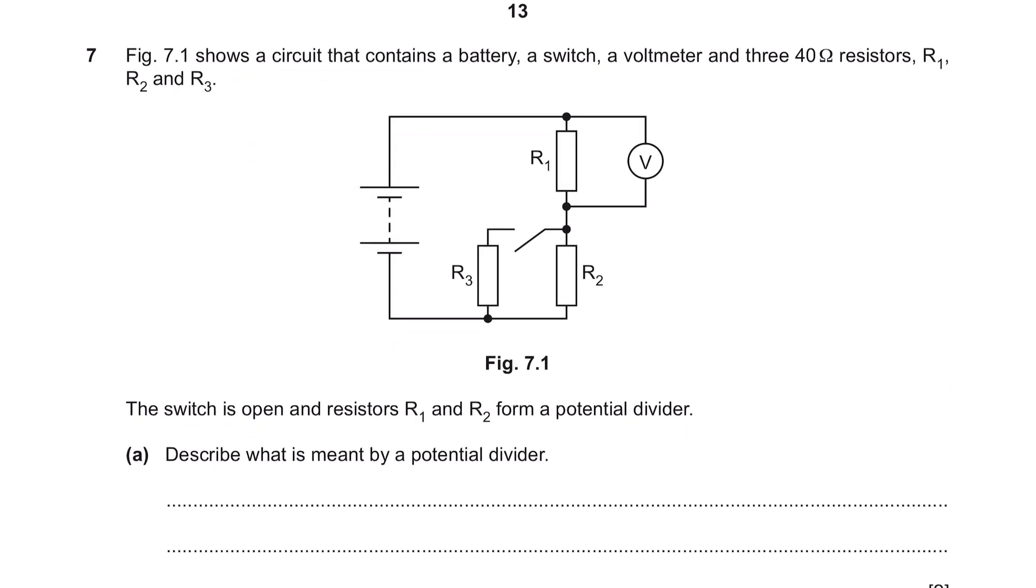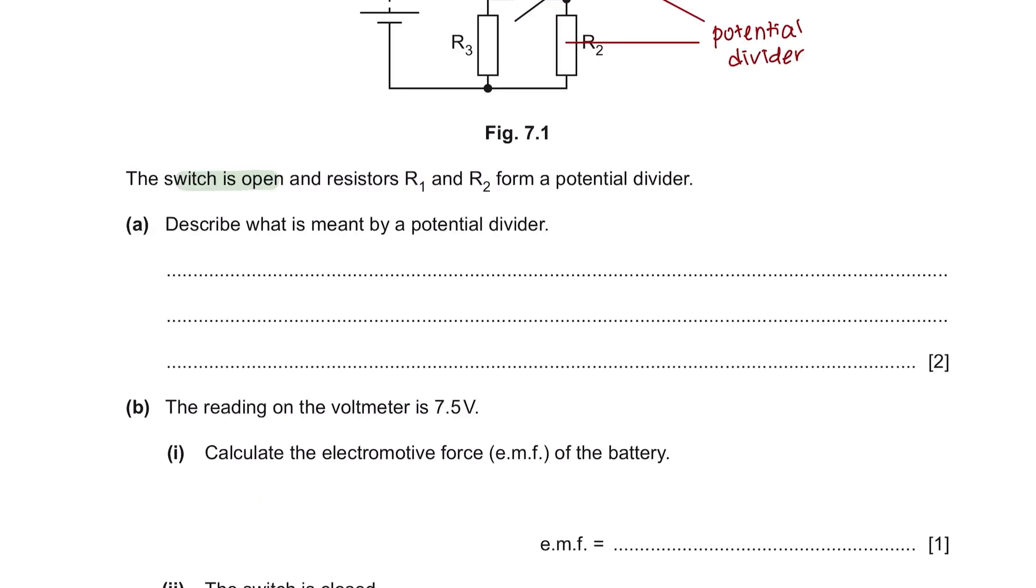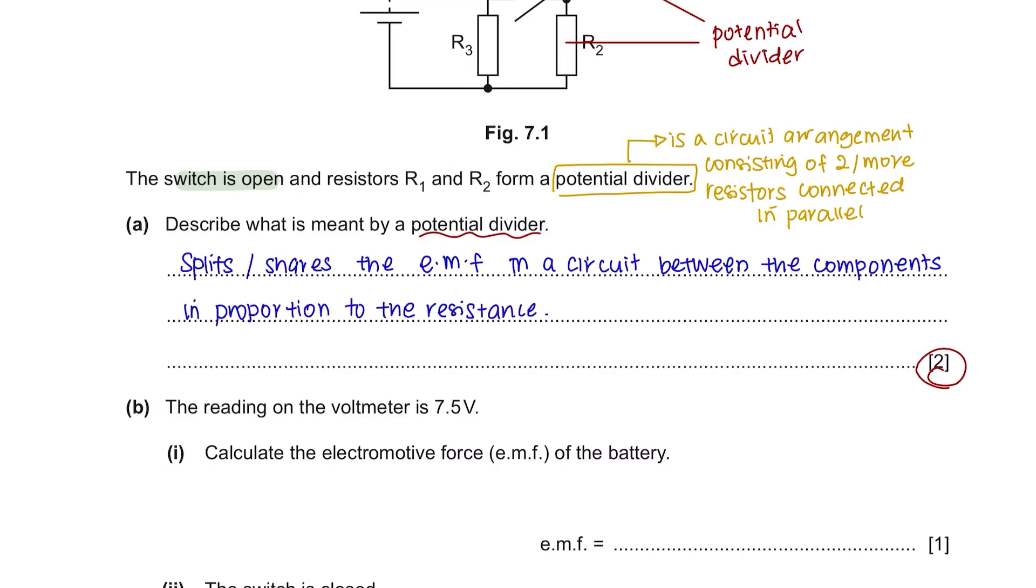Question 7. Figure 7.1 shows a circuit that contains a battery, a switch, a voltmeter, and three resistors with 40 ohms. The switch is open and resistor R1 and R2 form a potential divider. A potential divider is a circuit arrangement consisting of two or more resistors connected in series. Question A: Describe what is meant by a potential divider. Two marks. A potential divider splits or shares the EMF or voltage in a circuit between the components in proportion to the resistance. The components in this circuit would be your resistors.